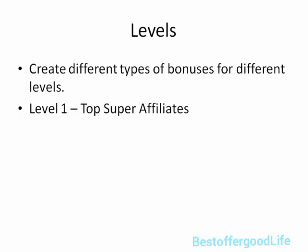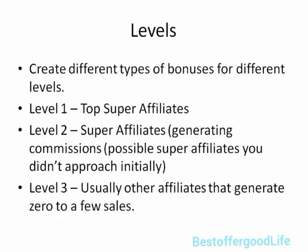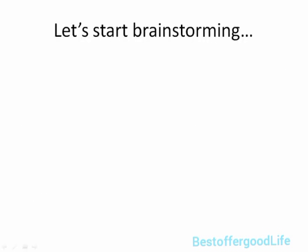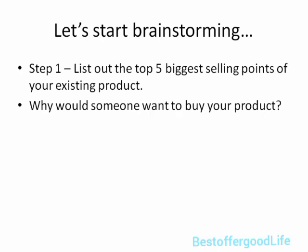Level number one are the top super affiliates. Level number two are the super affiliates — they tend to generate commissions, possibly super affiliates you didn't approach initially. Level number three are other affiliates that generate zero to a few sales. So let's start brainstorming. Step number one: list out the top five biggest selling points of your existing product. Pause this video and think about the top five reasons why somebody would want to buy your product, whether that's software features, a video course — pick out your different videos, different strategies, and so forth.